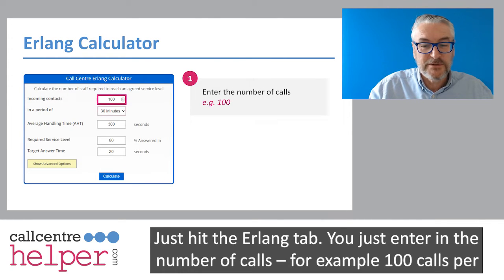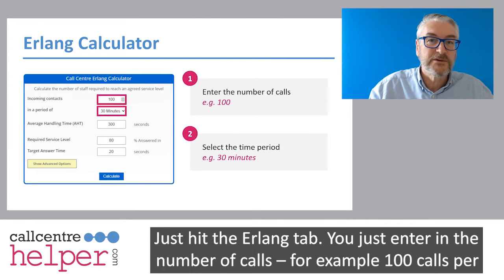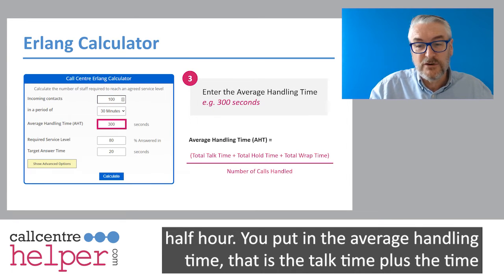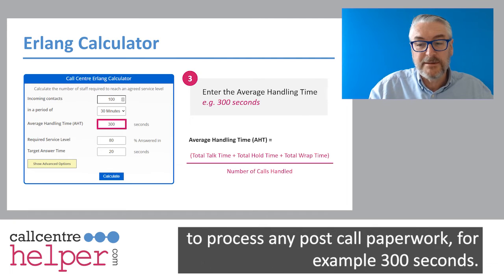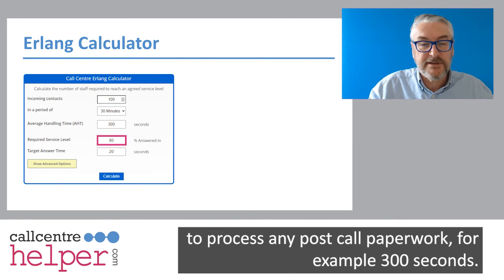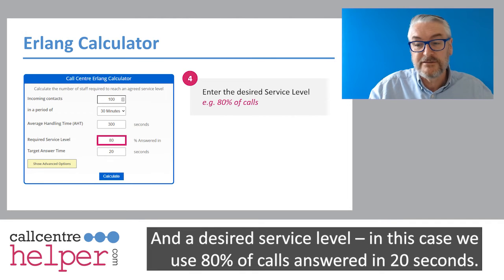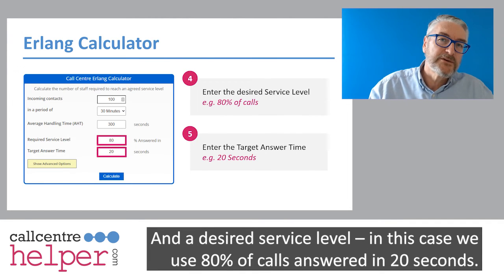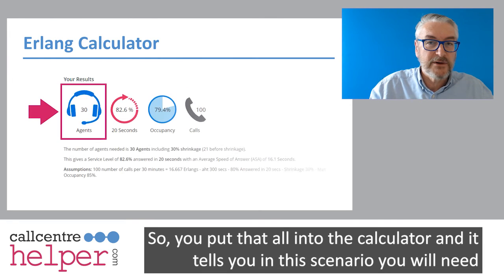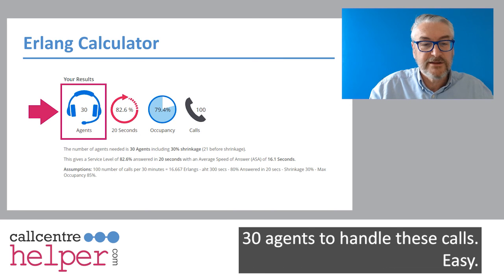You just enter the number of calls — for example, 100 calls per half hour. You put in the average handling time, which is the talk time plus the time to process any after-call work or wrap-up time. So, for example, an average handling time of 300 seconds and a desired service level — in this case, 80% of calls answered within 20 seconds. You put that all into the calculator, and in this scenario it tells you that we need 30 agents to handle these calls.